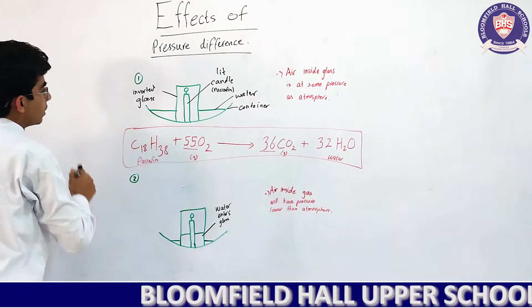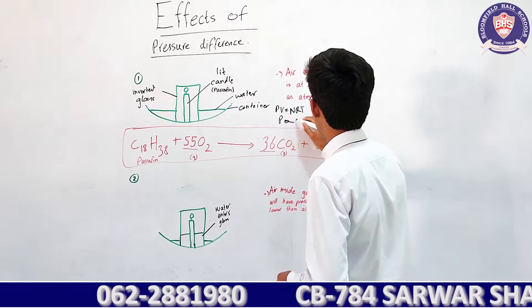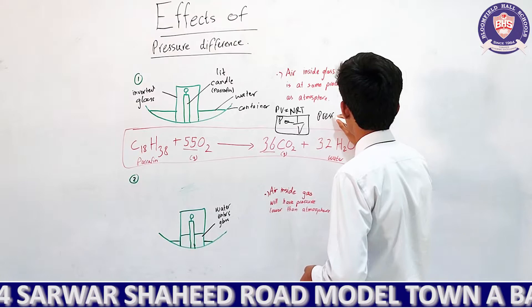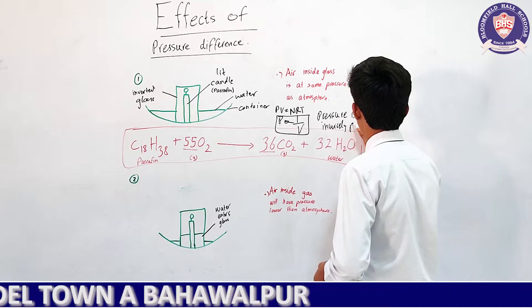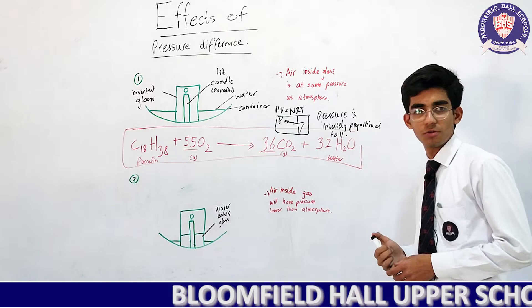This relates to the ideal gas equation PV = nRT. If we treat n, R, and T as constant factors, then P will be inversely proportional to V. So pressure is inversely proportional to volume.